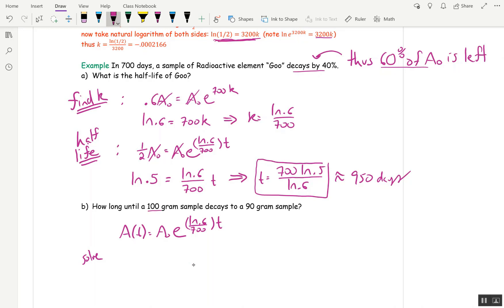A₀ is 100. And we're setting A equal to 90. So 90 equals 100 e to the ln of 0.6 over 700 times t. Okay. Divide. You can't take ln of both sides at this point. So that's very important. If you take ln of both sides, the right is not going to cancel because that 100 is there. So clear out the 100 first.